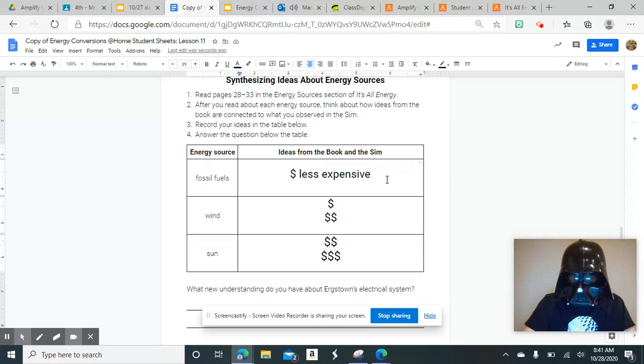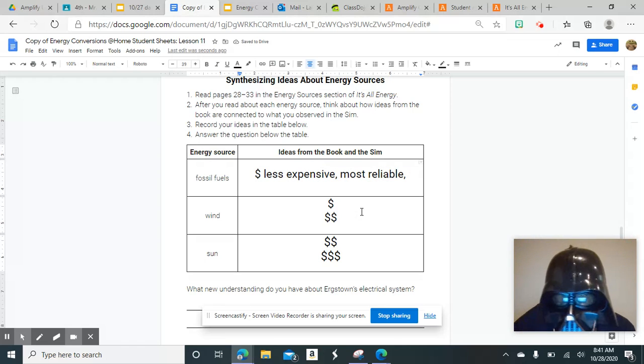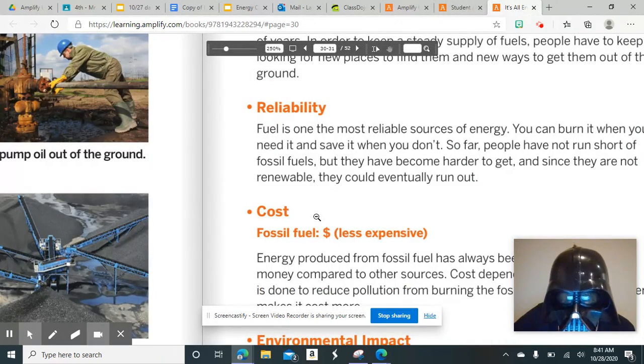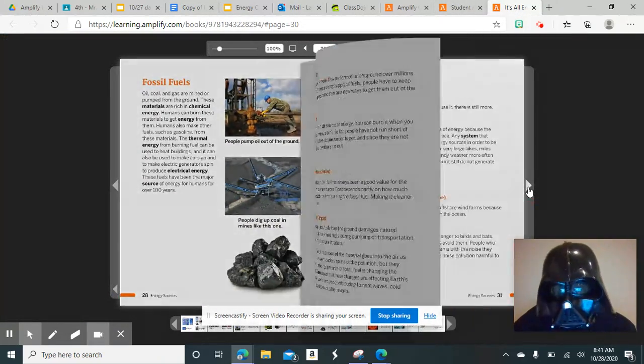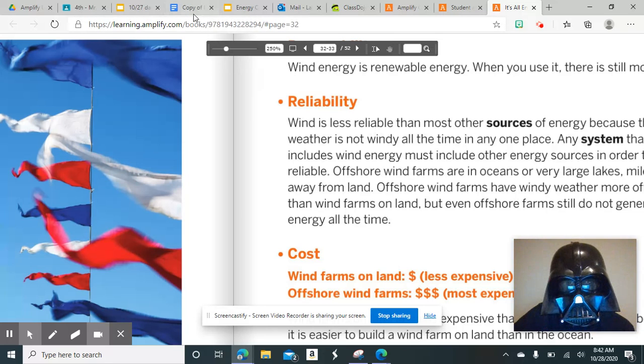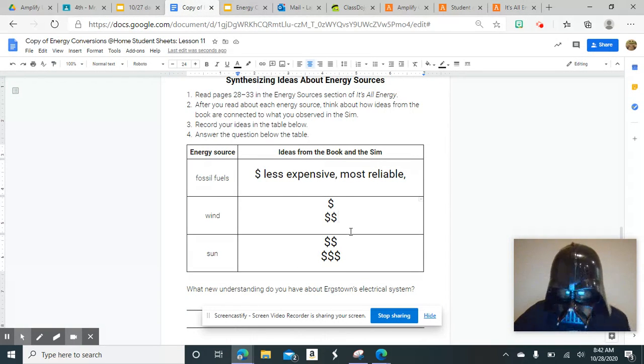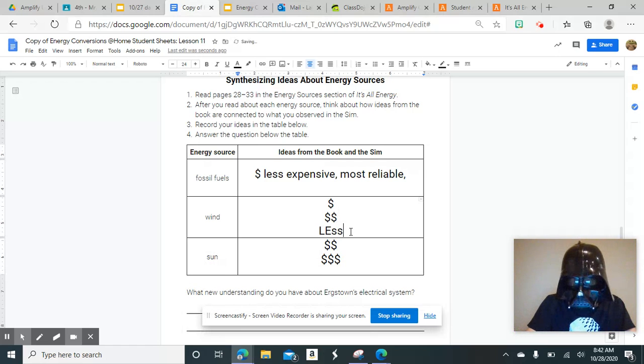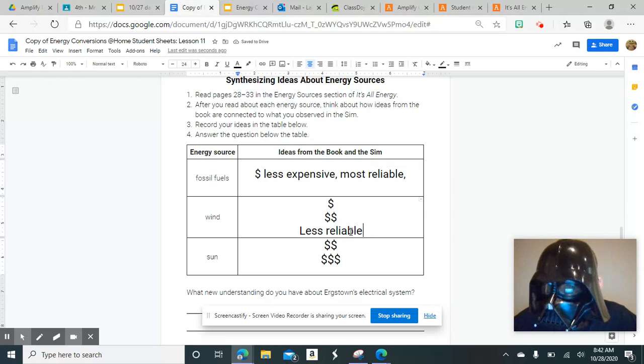That would be what I do for each of these. So for wind, I would go into my book, It's All Energy. I would turn to wind and look at its reliability, and I would see that wind is less reliable than most others. So then I go back to my document, and I would type in that it is less reliable than some of the other energy sources.